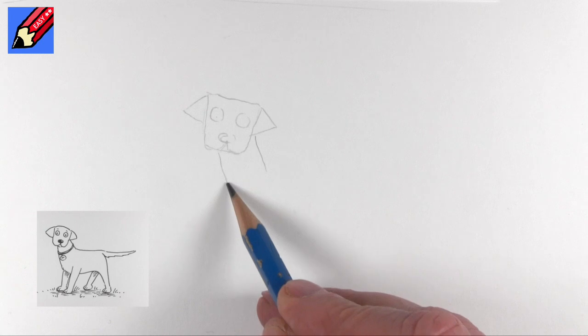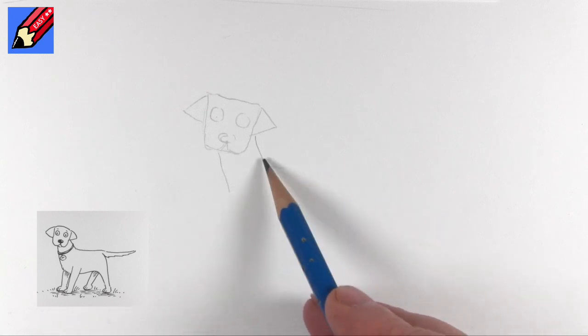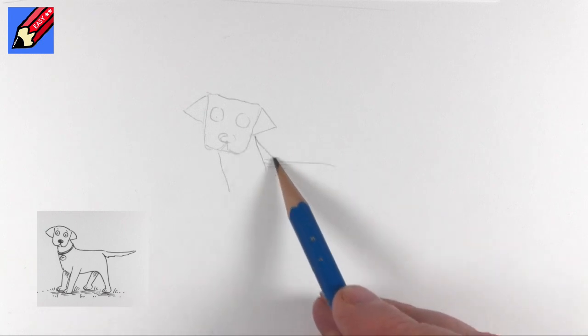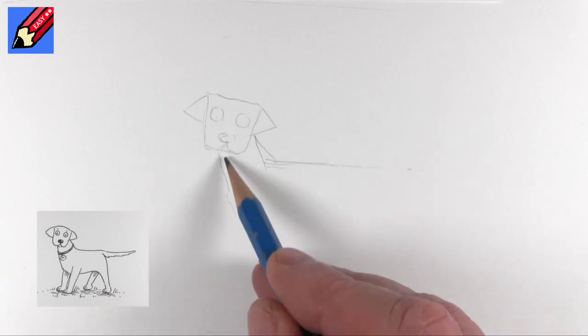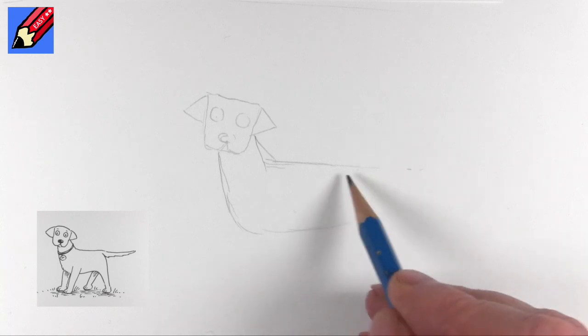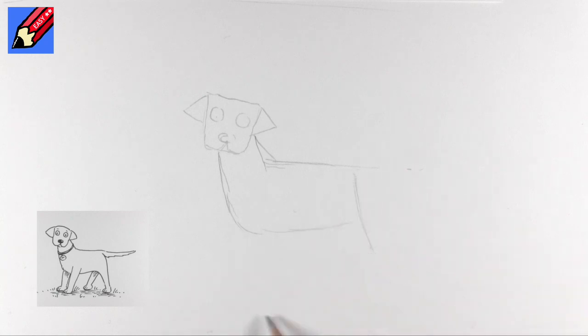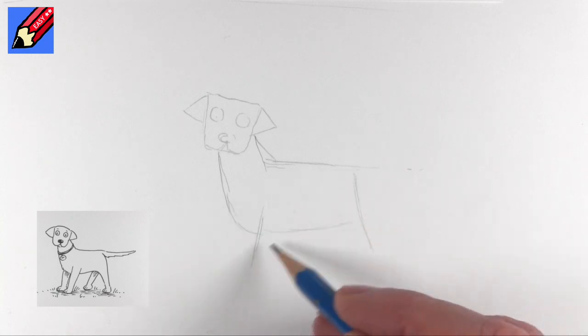and then we'll bring the neck. They have quite a big thick neck and then we're going to want the body coming kind of about like that and then the neck will come quite like that. They've got great big heavy bodies, chunky aren't they Labradors?